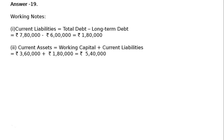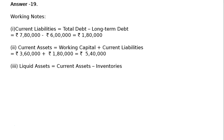Working capital given to us is Rs. 3,60,000 plus current liabilities Rs. 1,80,000 from step 1. So our current assets is Rs. 5,40,000. Step 3: Liquid assets equals current assets minus inventories. That is Rs. 5,40,000 minus inventories Rs. 1,80,000. We get liquid assets, that is Rs. 3,60,000.